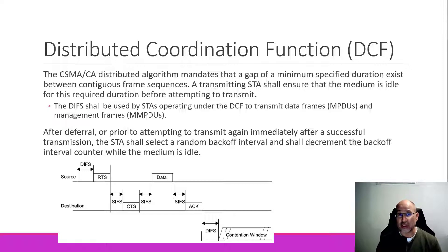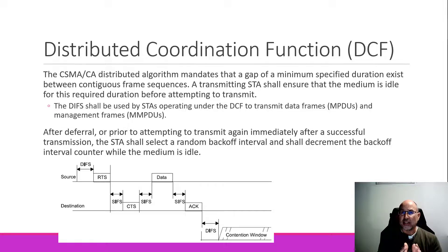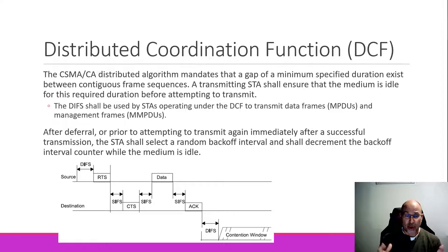If you tried to transmit and had to defer because the channel was busy, or you're ready to transmit another frame, you still have to wait for the DIFS or some multiple of the distributed interframe space. The diagram on this slide illustrates it: the source waits for the DIFS, might use RTS-CTS, with the SIFS — the short interframe space — as the wait time in between those. If RTS-CTS makes it through, you wait for another SIFS and send your data, then another SIFS for the ACK. Then you're back in contention and have to wait for the DIFS again. With fragmentation, you add more data chunks plus additional SIFS intervals and ACKs.